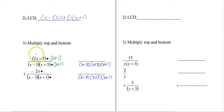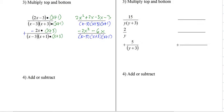And this allows us to distribute. So we get 2x squared plus 2x minus 3x minus 3. And then on the bottom, it's missing an x plus 3. And so when we distribute, we get minus 2x squared minus 6x. And now that we have a common denominator, we can add or subtract.